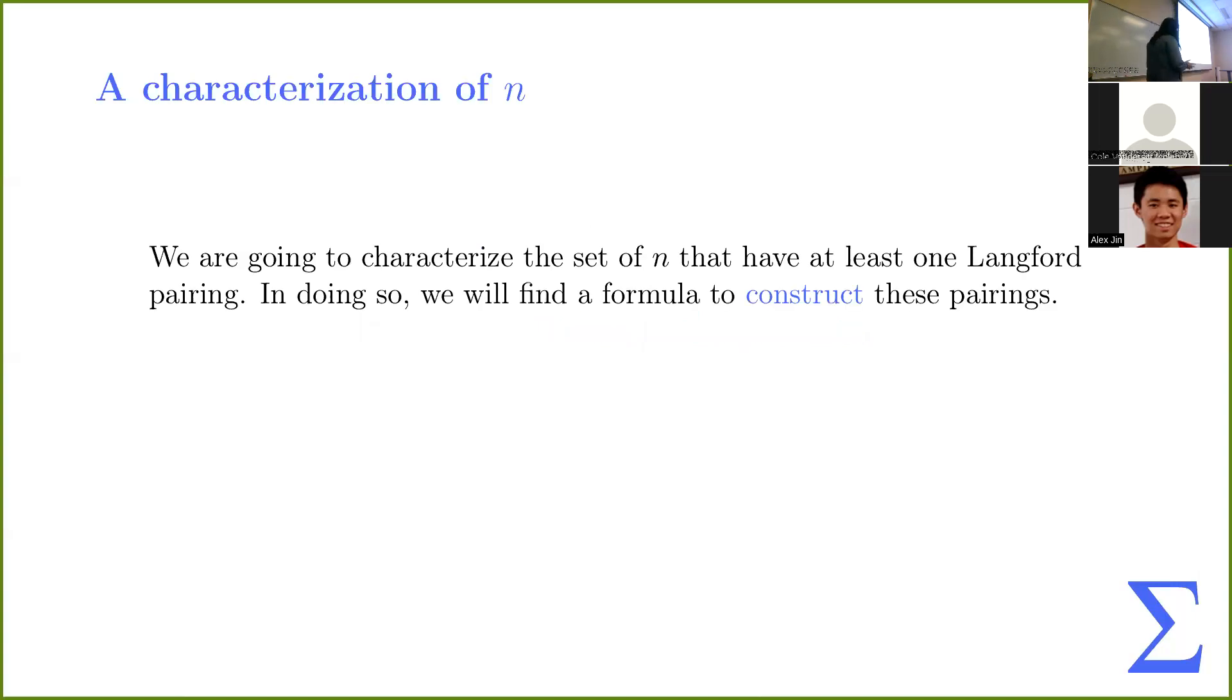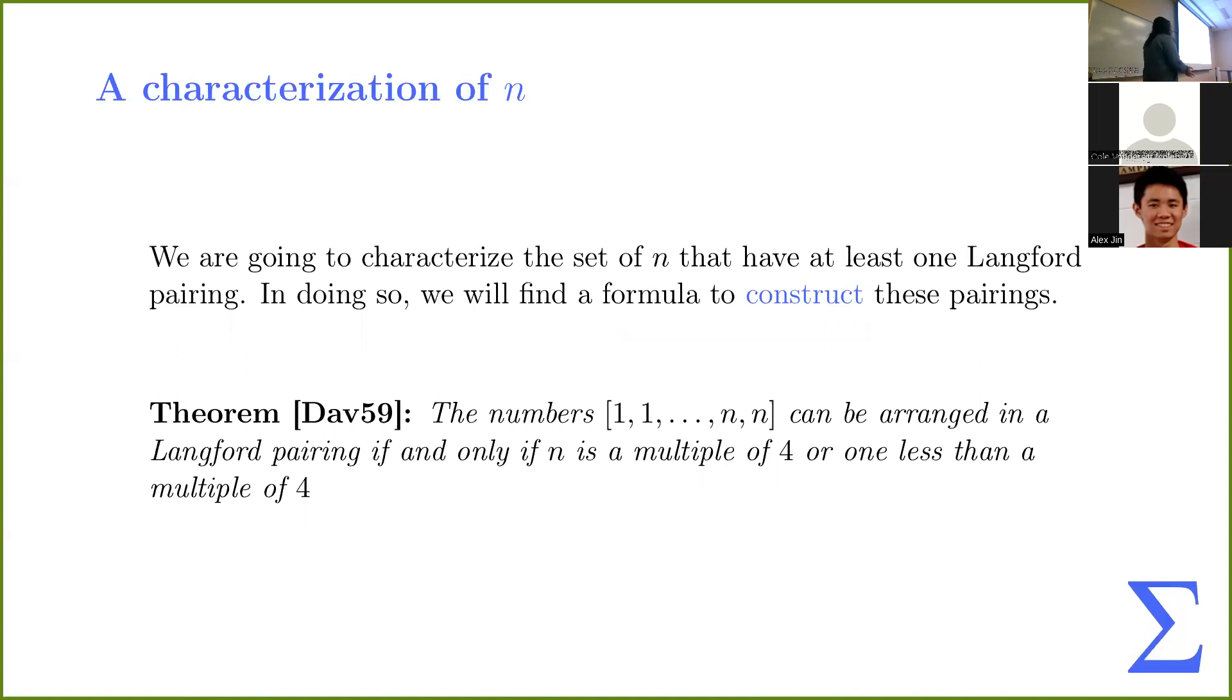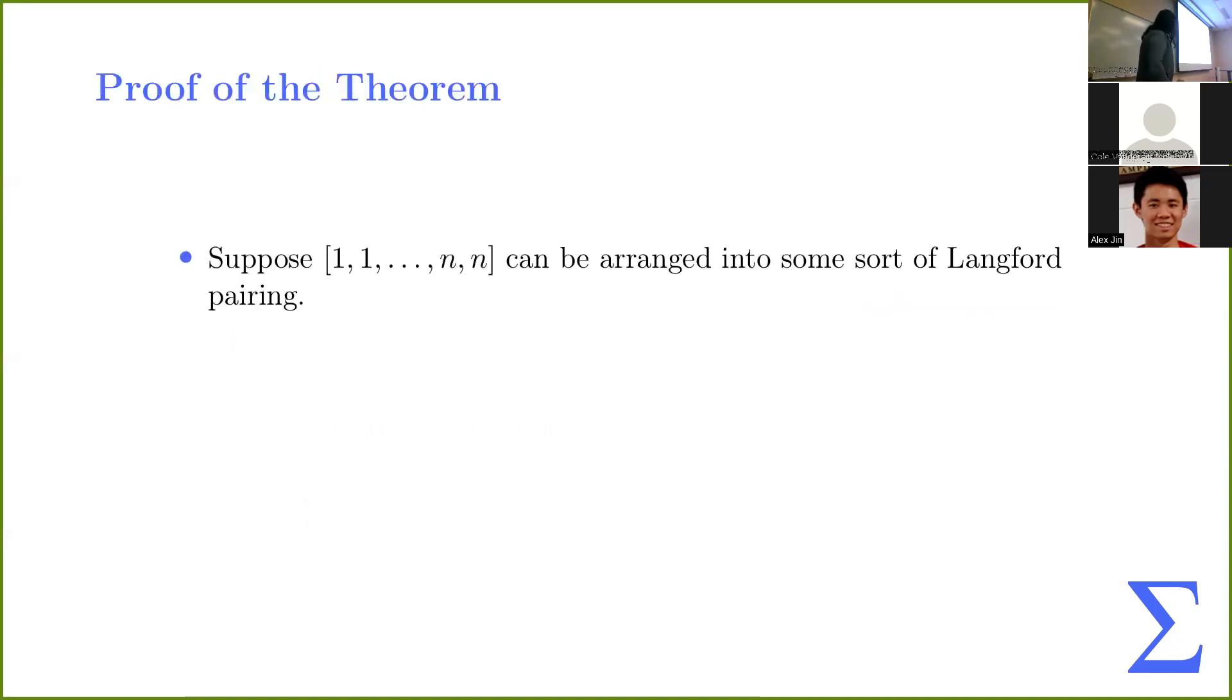So we're going to actually find a formula to construct these pairings. And here's a theorem from 1959, when some people started looking at these objects. So the numbers can be arranged into a pairing, if and only if n is a multiple of four, or one less than a multiple of four. So you can write it as either 4m or 4m minus one. So it worked for four, it worked for three. And it didn't work for one or two. So we can kind of see, this fits the pattern so far. So now we're going to go through why, if we can arrange into a pairing, it must be a multiple of four, or one less than a multiple of four.